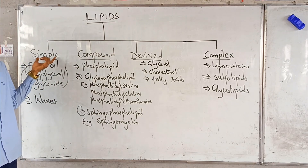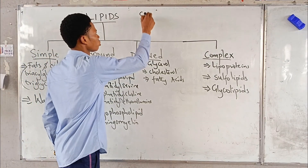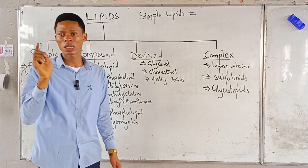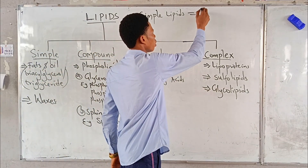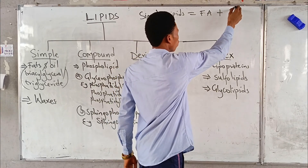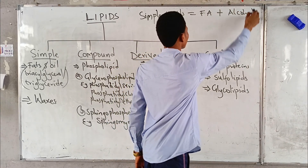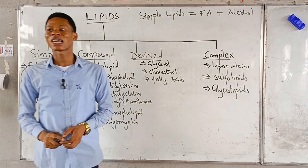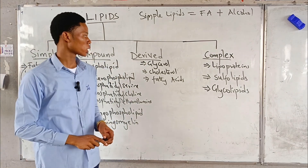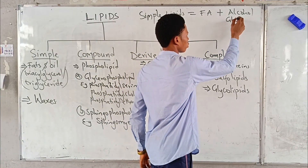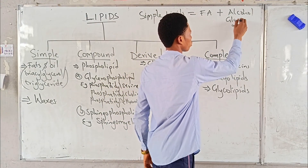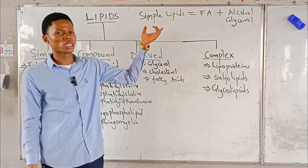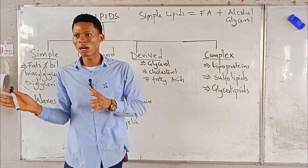The very first one — simple lipid. Simple lipids are composed of just two things: fatty acid and alcohol. Sometimes the alcohol present is usually glycerol, but other times the alcohol can be other things. So majorly, simple lipids are composed of fatty acid and glycerol.